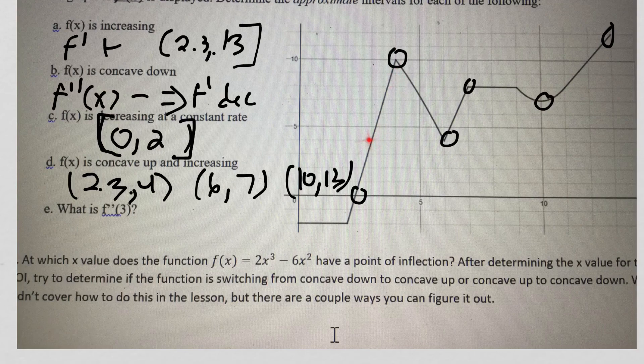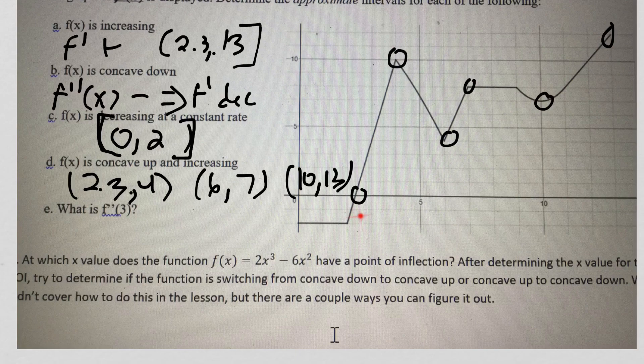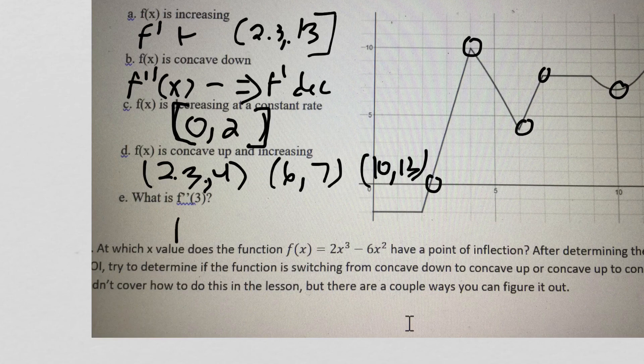So if you start from here, run by 1, rise by 1, 2, 3, 4, 5, 6. Run by 1, rise by 1, 2, 3, 4, 5, 6. The slope is 6. So we can just say f double prime 3 equals 6.